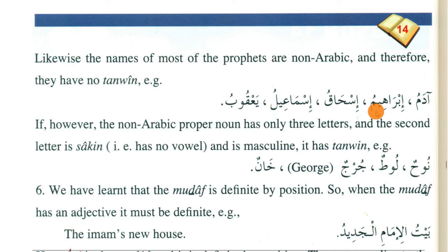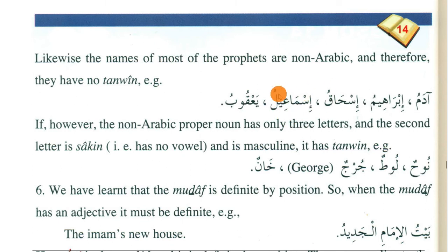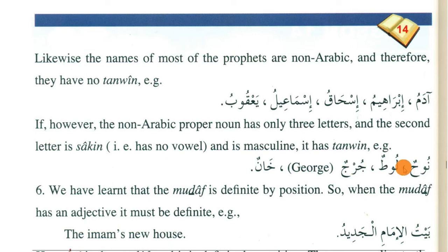Since most of the prophets are also non-Arab, their names also don't have tanwin. Some people think that Ibrahim and Ismail were Arab — they were not Arab. Ismail was the first prophet who started speaking Arabic. So their names also do not have tanwin. However, there is an exception: those non-Arabic names which are three letters and have sukoon on the middle letter — we use tanwin with them.